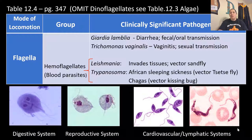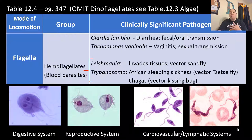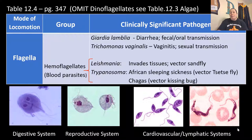We want to look at the groups of protozoa that make us sick. Protozoa are most of the time categorized by how they move. The first mode of locomotion is flagella — the tail-like extension. The first clinically significant pathogen in this group is Giardia lamblia, which causes diarrhea and is transmitted through the fecal-oral route through the digestive system.